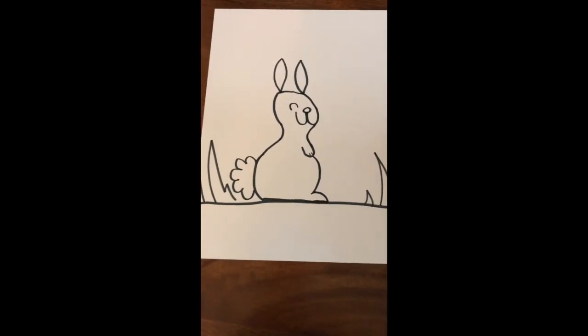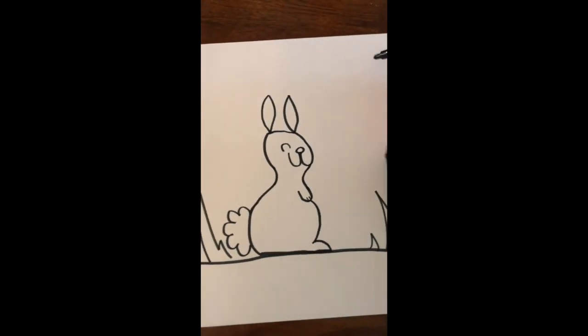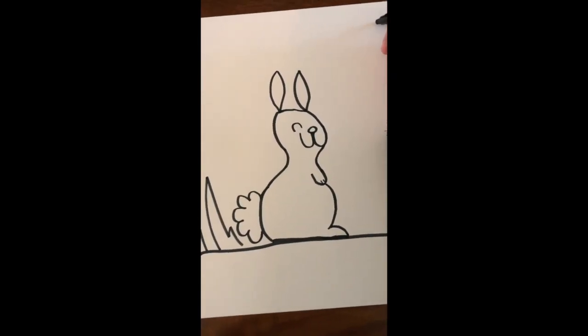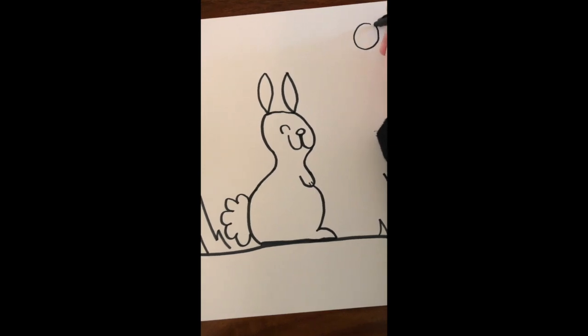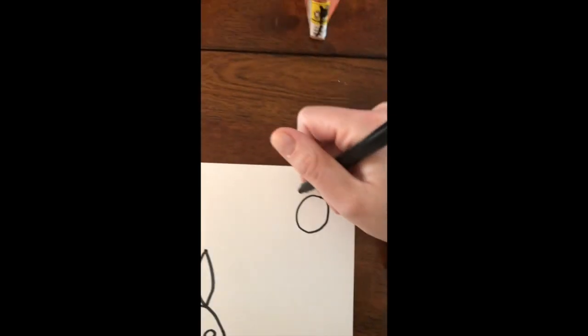Now I've added grass and ground to my bunny picture. Up in the corner, I'm going to make a sun right now. I'm going to draw a nice little circle and some rays.